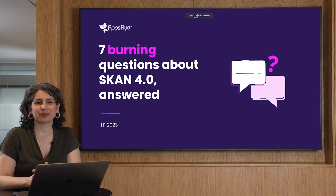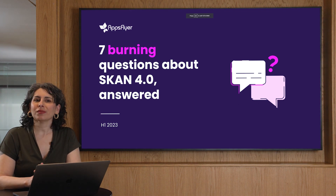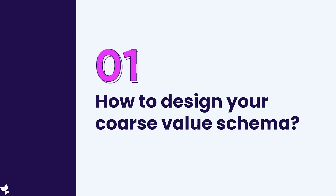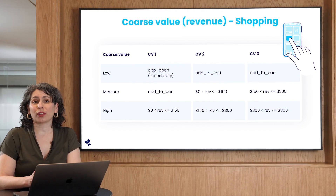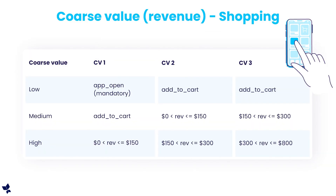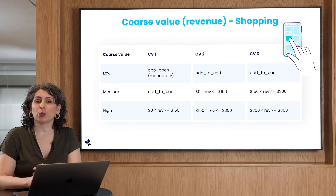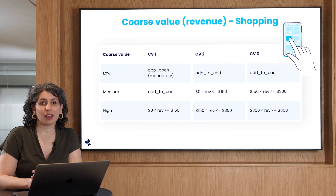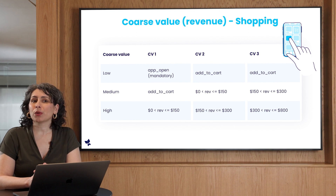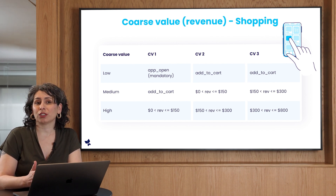So let's dive into question one: how do you design a coarse value schema? A coarse value has only three values for each window — low, medium, and high. In this example, we're looking at how an advertiser configures their schema based on revenue for shopping. In window one, we use low for add to cart. This example is based on the most measurable metrics and events among our SKAN customers in each vertical.